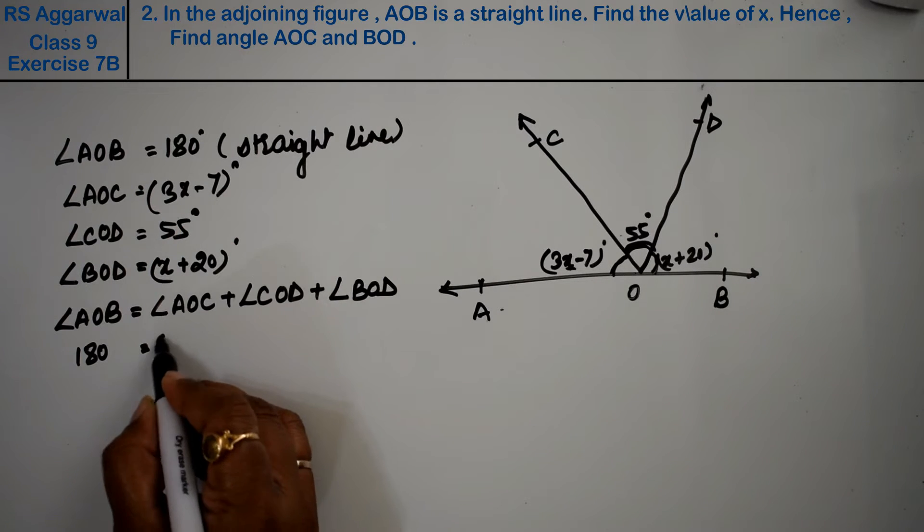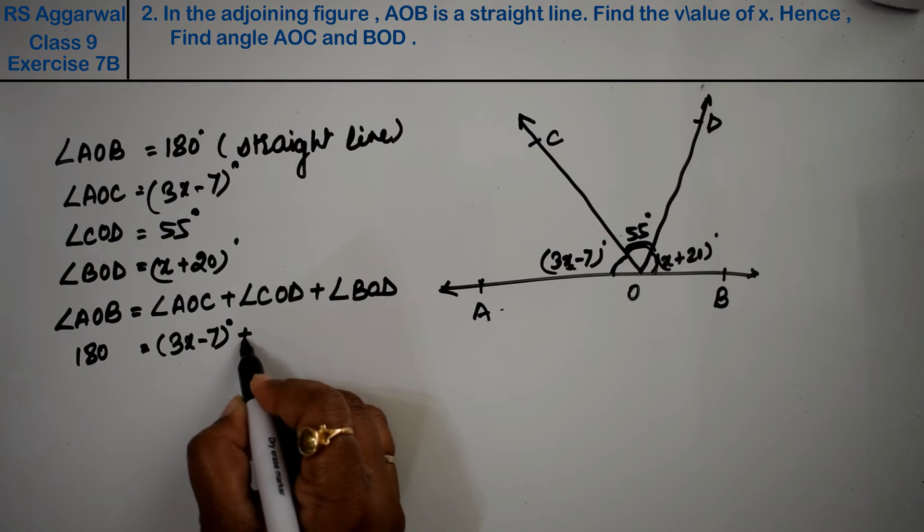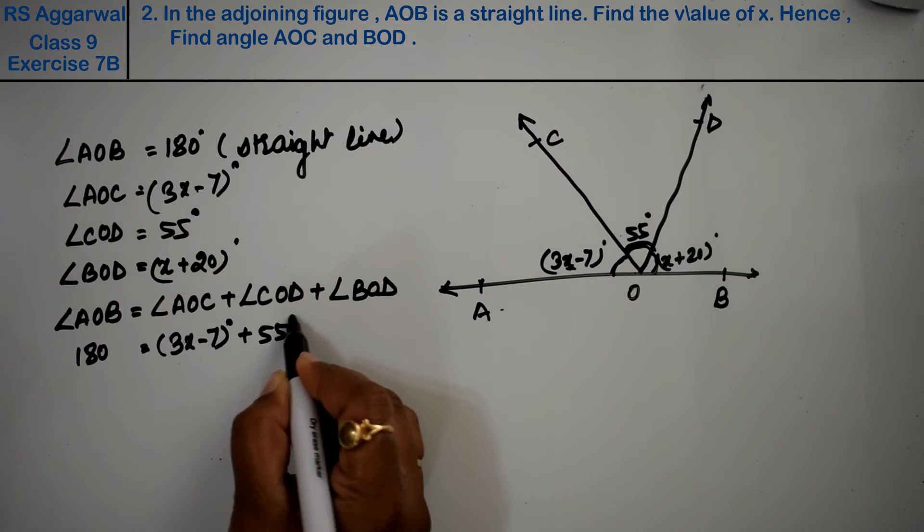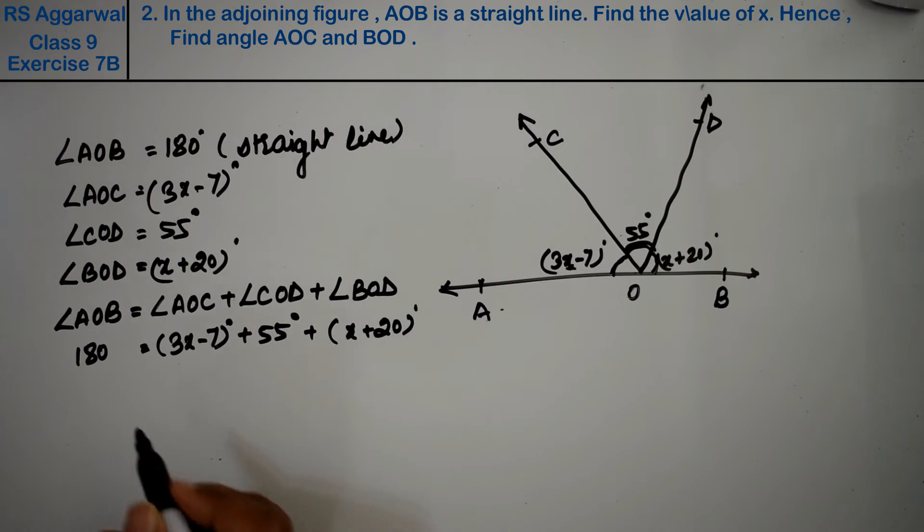AOC was 3x minus 7 degrees, COD was 55 degrees, and BOD was x plus 20 degrees.